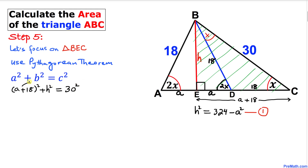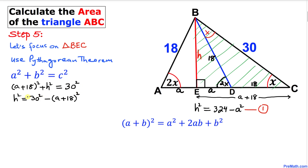So H² = 900 − (A + 18)². Now let's expand this binomial using the formula (A + B)².